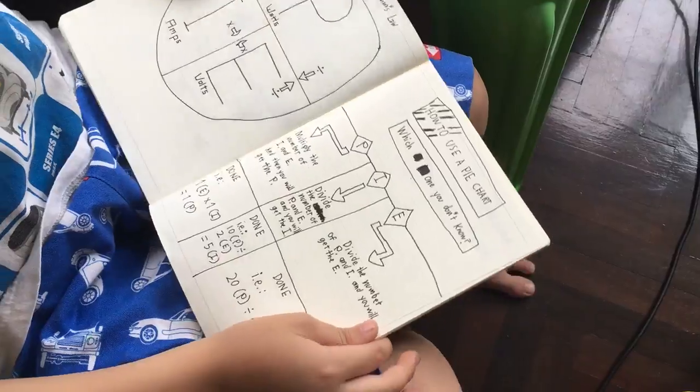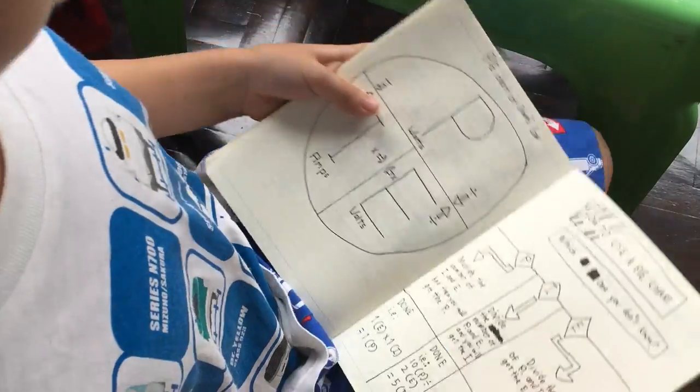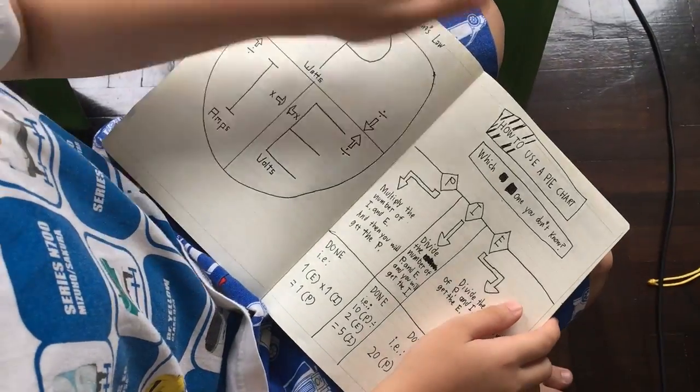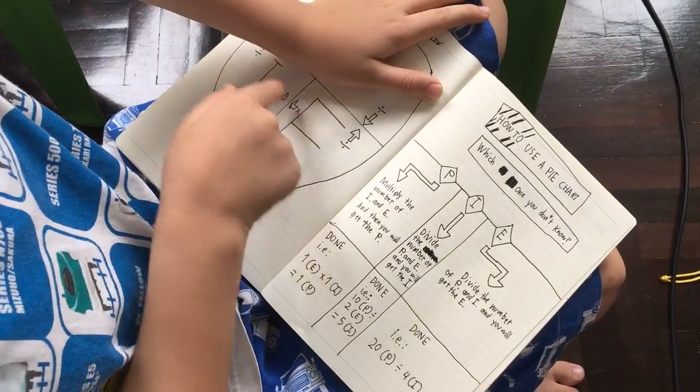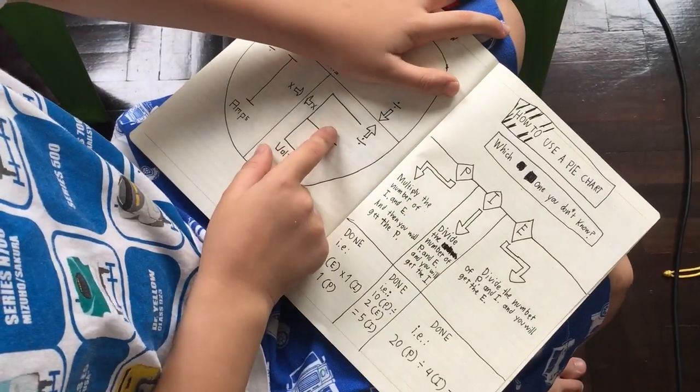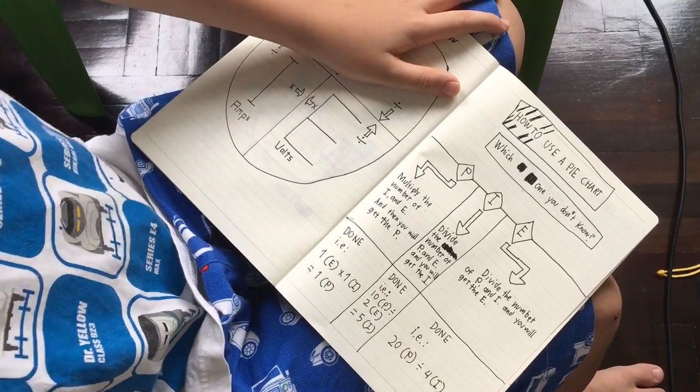Okay. Here, here. How do you use a pi chart? Which one do you don't know? Let's say we don't know watts. Okay. We multiply these two together. For example, this is 10 and this is 10. What's 10 times 10?